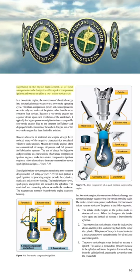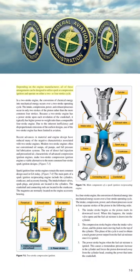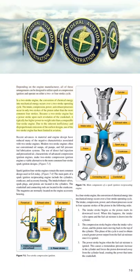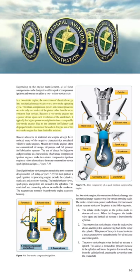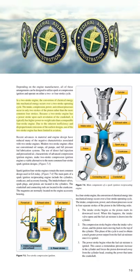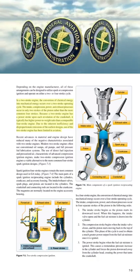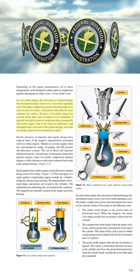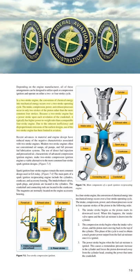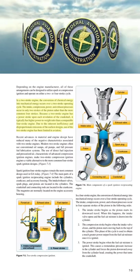All of these arrangements can be designed to utilize spark or compression ignition and operate on either a two- or four-stroke cycle. In a two-stroke engine, the conversion of chemical energy into mechanical energy occurs over a two-stroke operating cycle. The intake, compression, power, and exhaust processes occur in only two strokes of the piston. Because a two-stroke engine has a power stroke upon each revolution of the crankshaft, it typically has a higher power-to-weight ratio than a comparable four-stroke engine. However, due to inherent inefficiency and disproportionate emissions, use of the two-stroke engine has been limited in aviation.